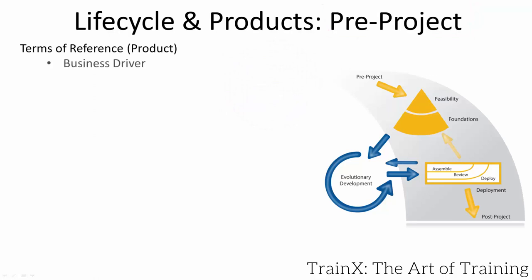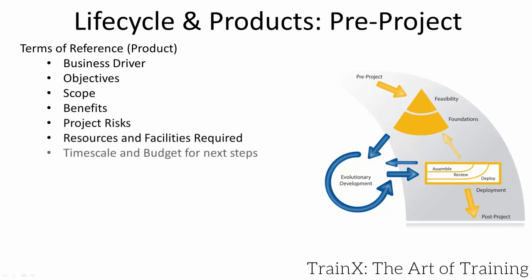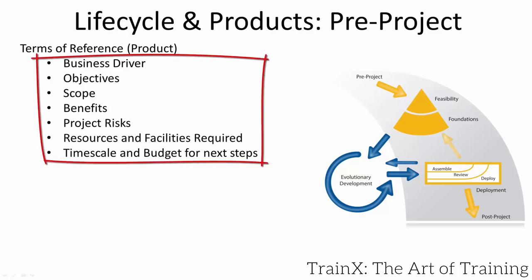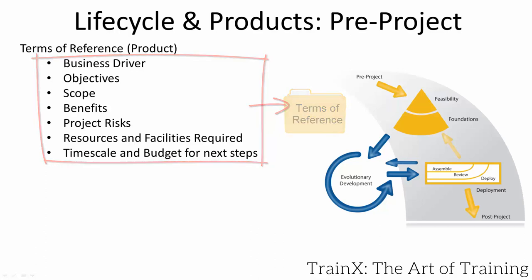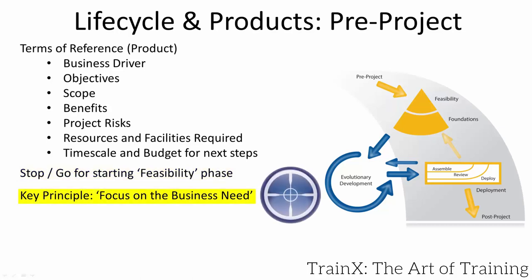The CEO puts all key points from the whiteboard discussion into Agile PM's Terms of Reference product. In consultation with colleagues, she decides to fund Agile PM's feasibility phase only, committing money and resources including a project manager for two weeks' effort. The idea is to establish what the solution could look like at a very high level and see if there are any showstoppers — technically or from the business side. We now have a project.